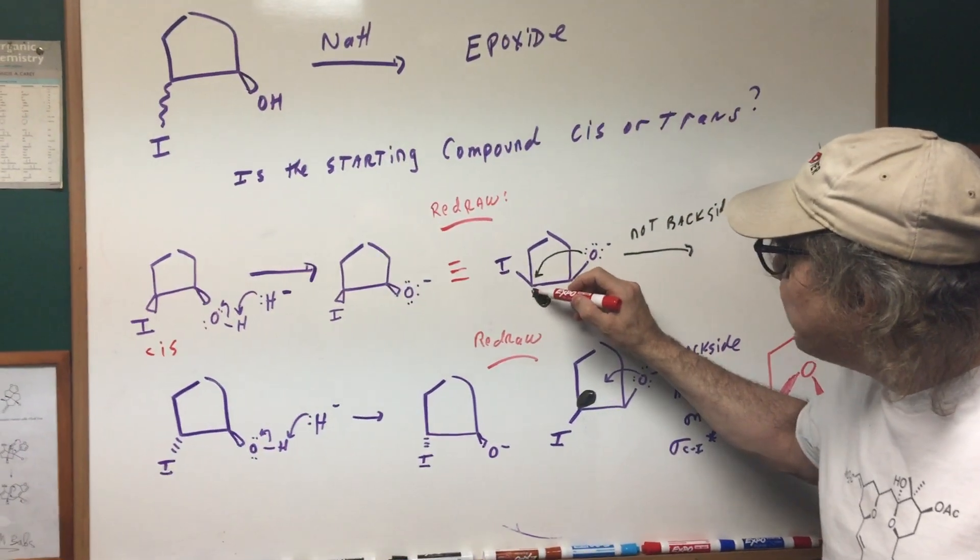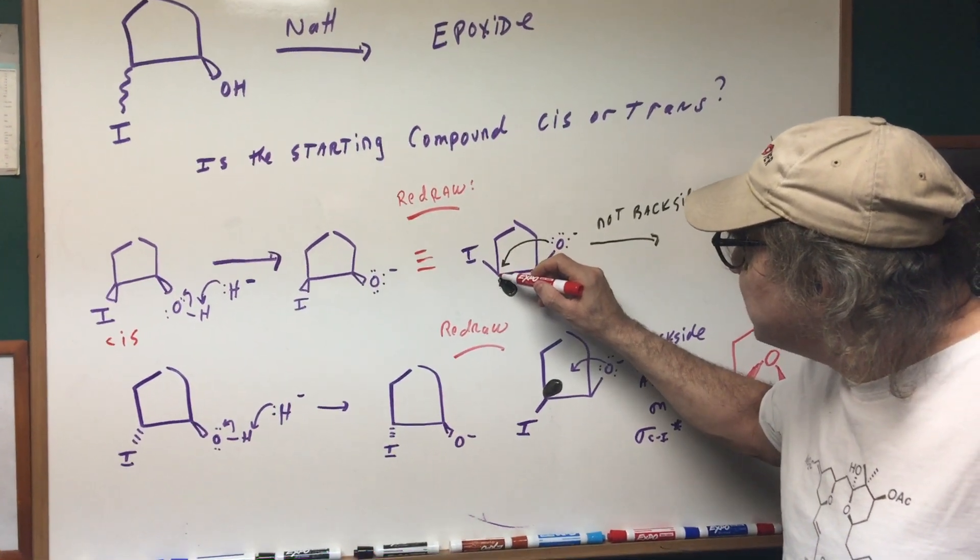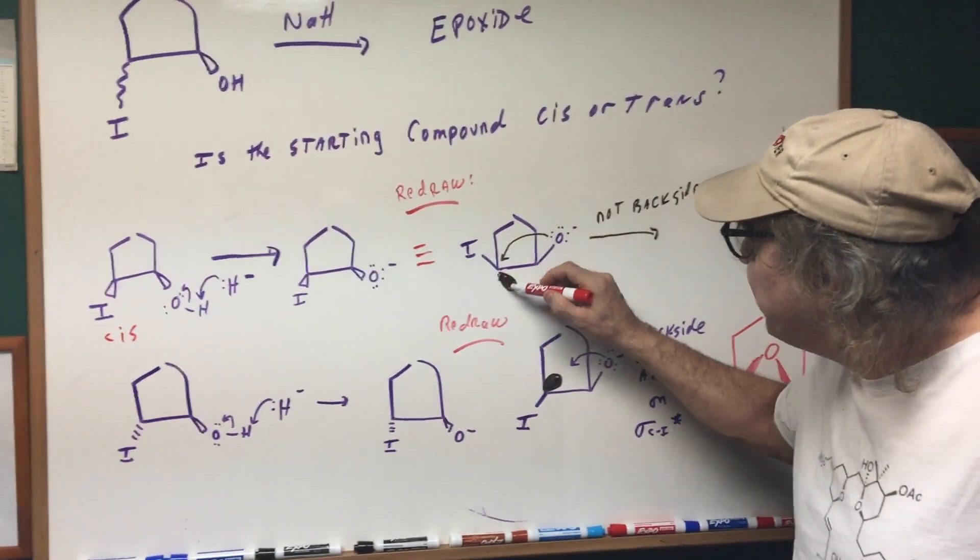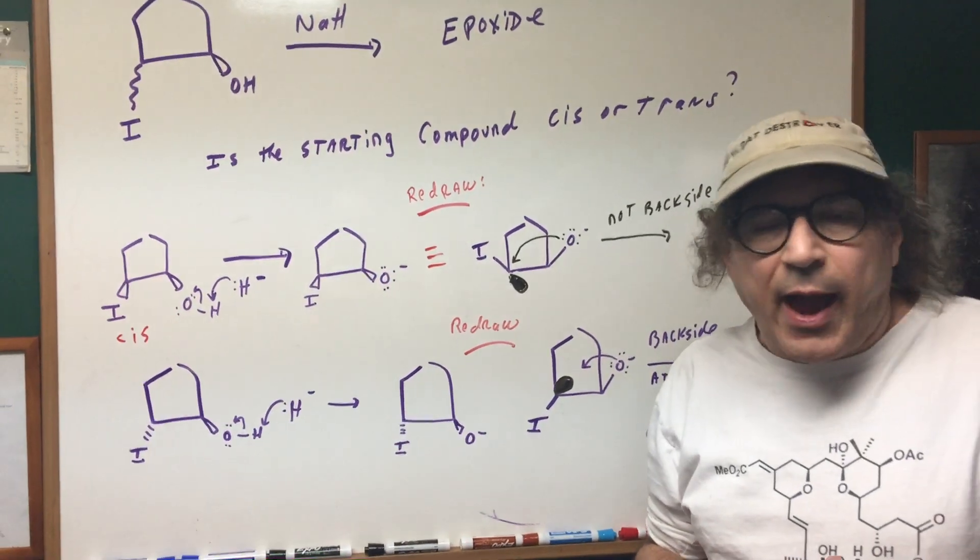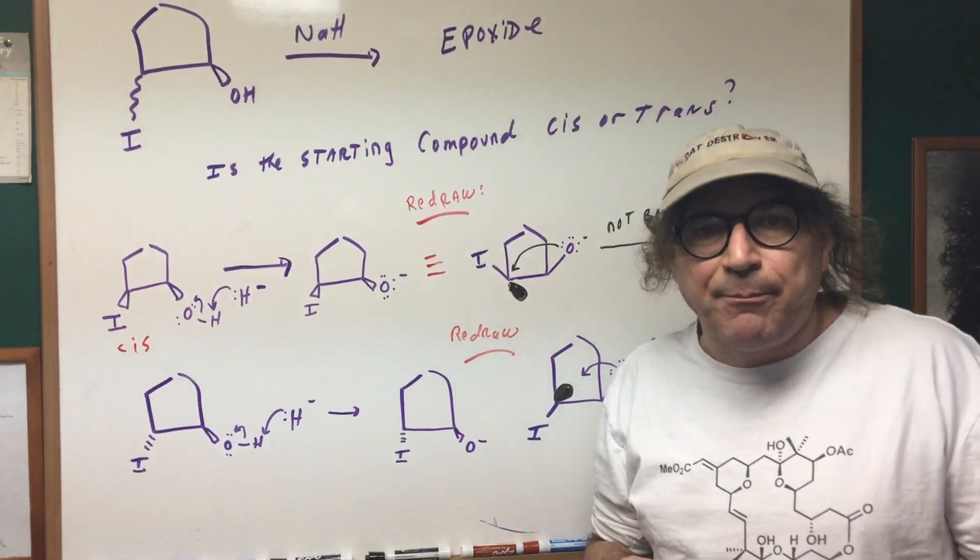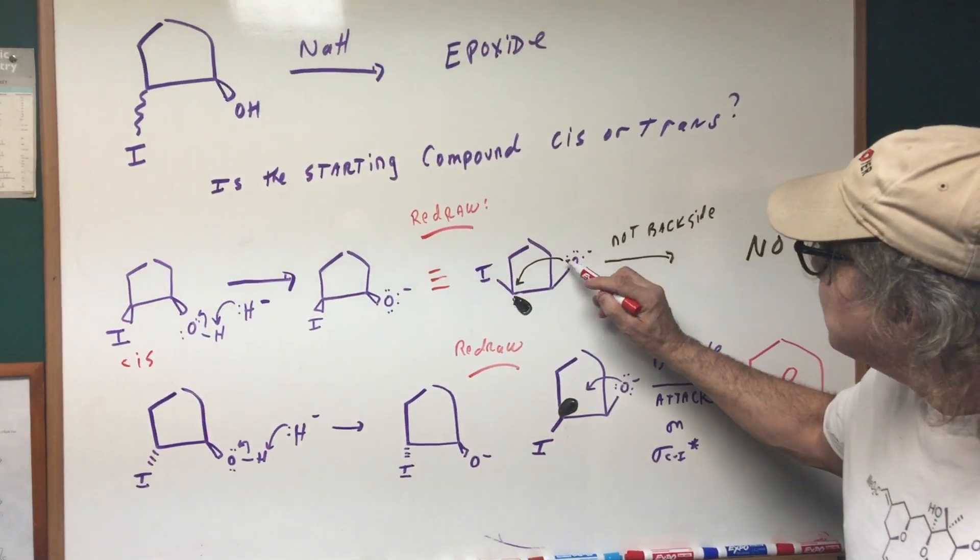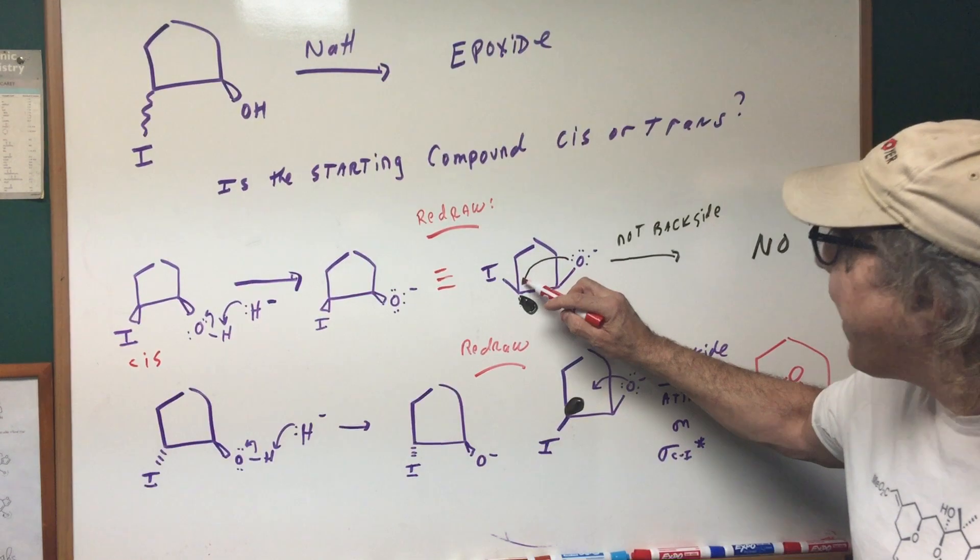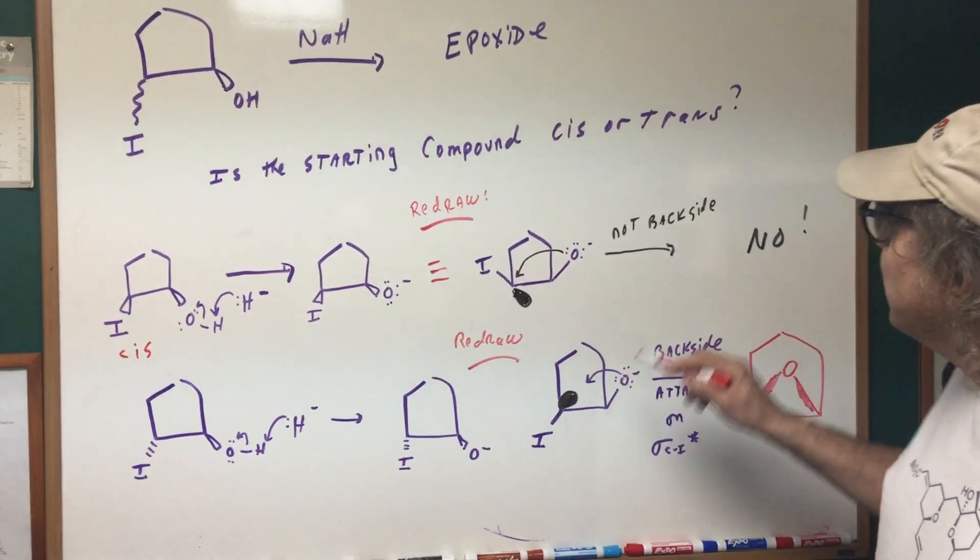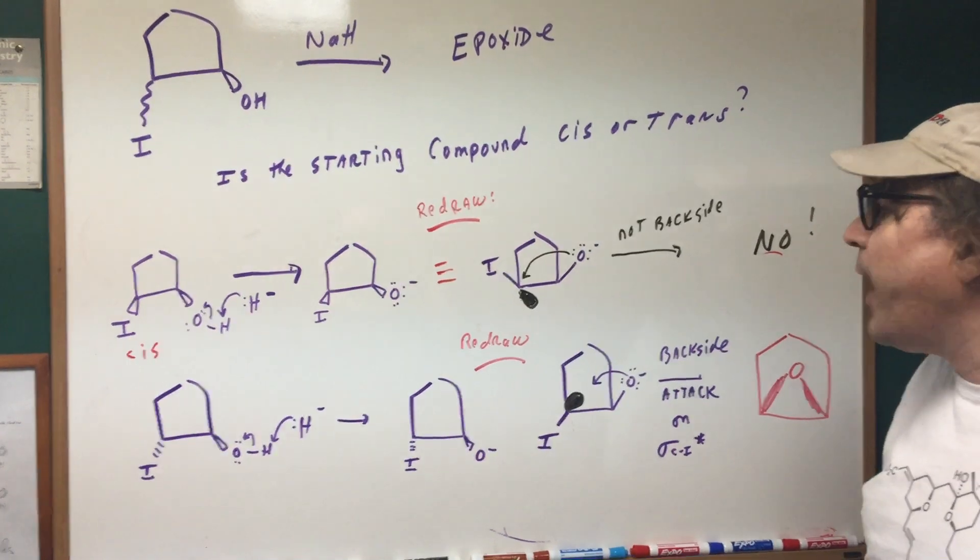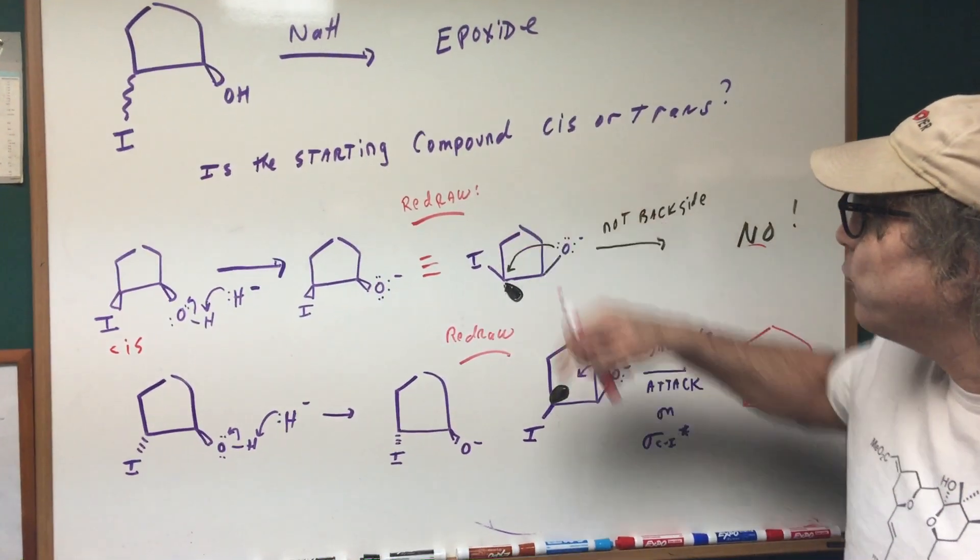Now the anti-bonding orbital is always at the rear. So as you can see, if this is the bonding orbital, this is the anti-bonding orbital here. Whenever we do a backside attack, we always hit the anti-bonding orbital, but it's got to be from the opposite side. I'm hoping you can see this is not a backside attack. The orbital is not correctly aligned. So therefore, this would not go. There is no backside attack here. It would actually be more towards the front side.